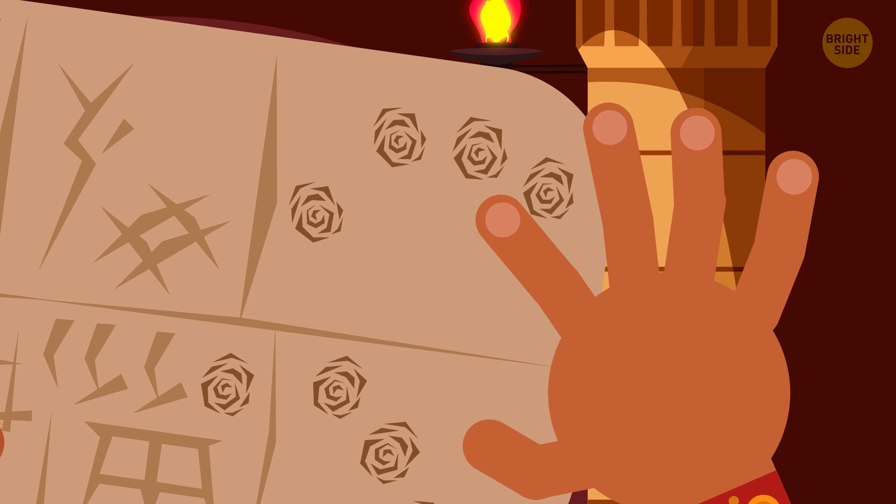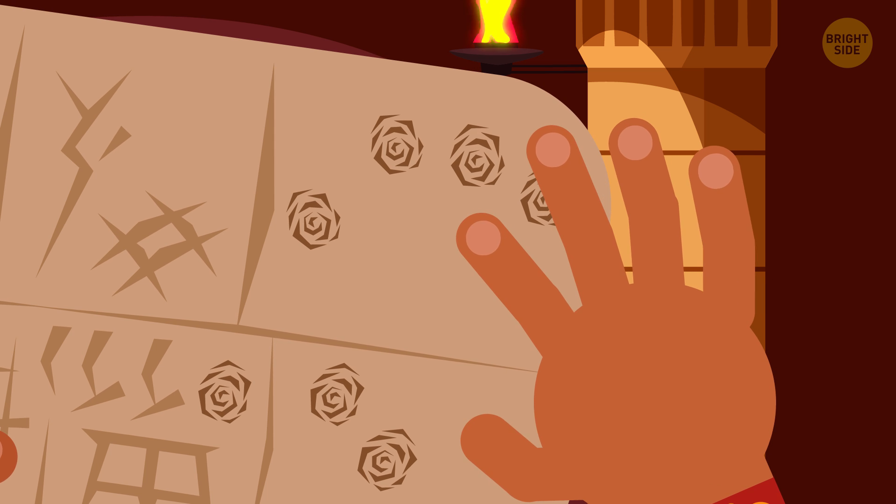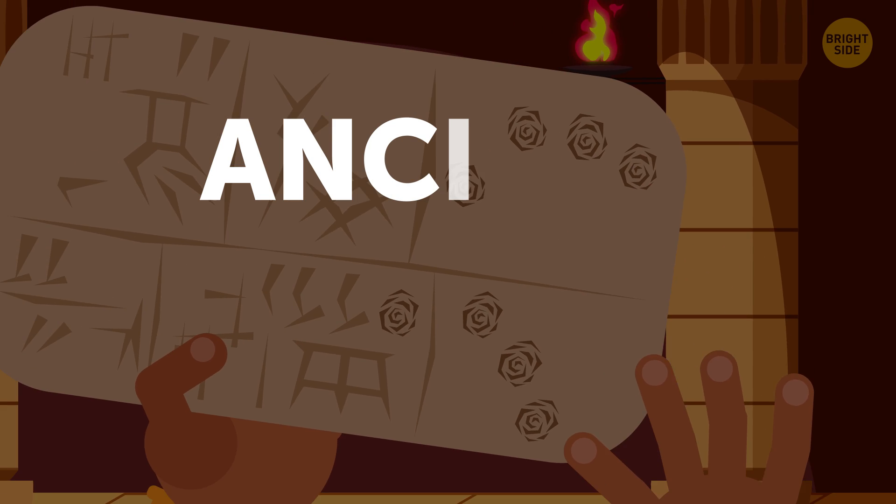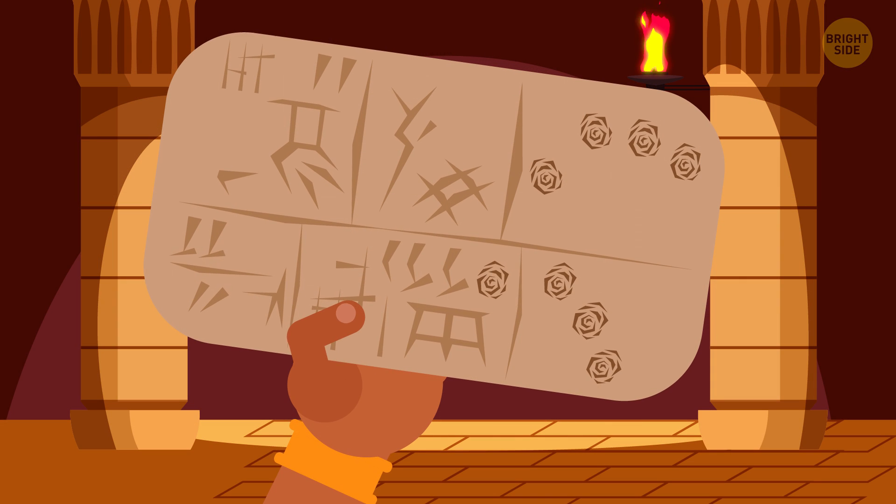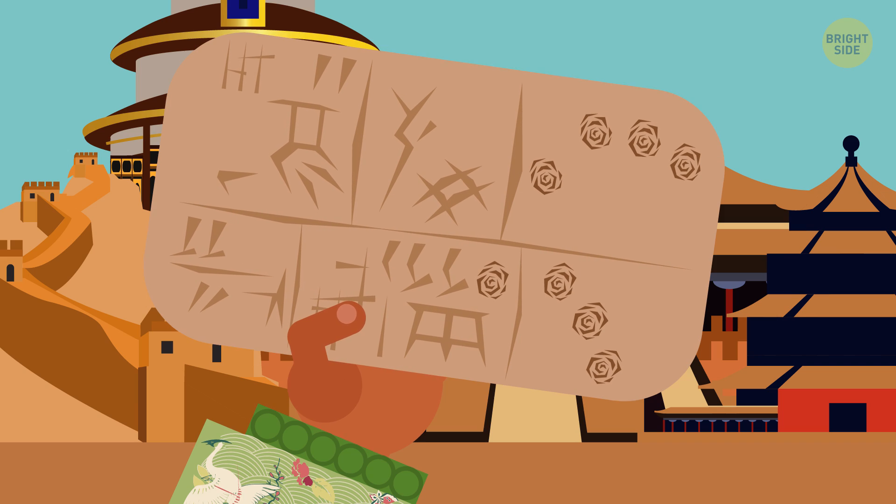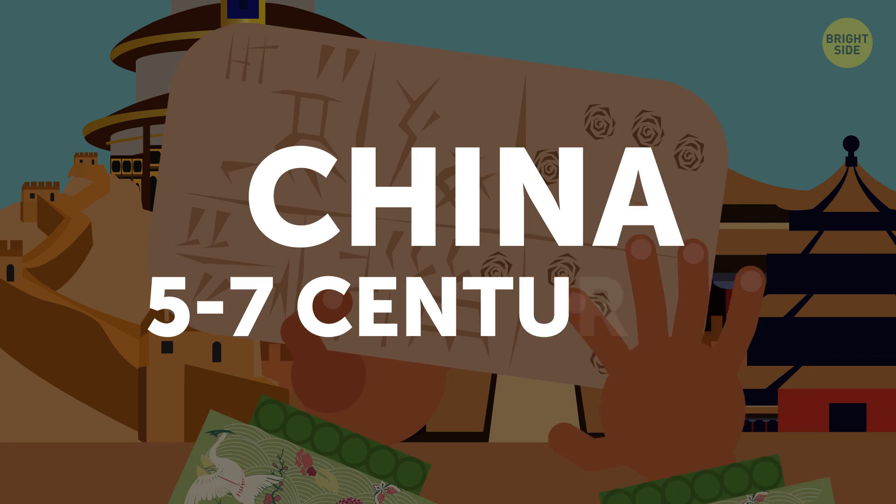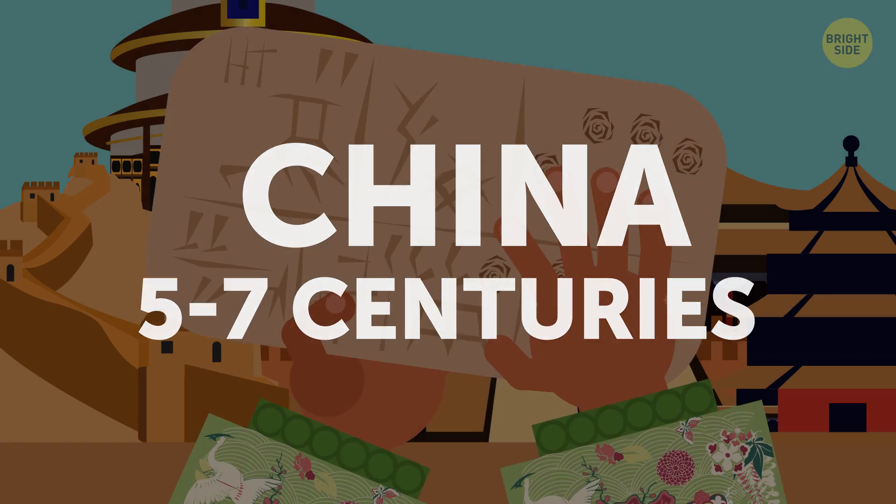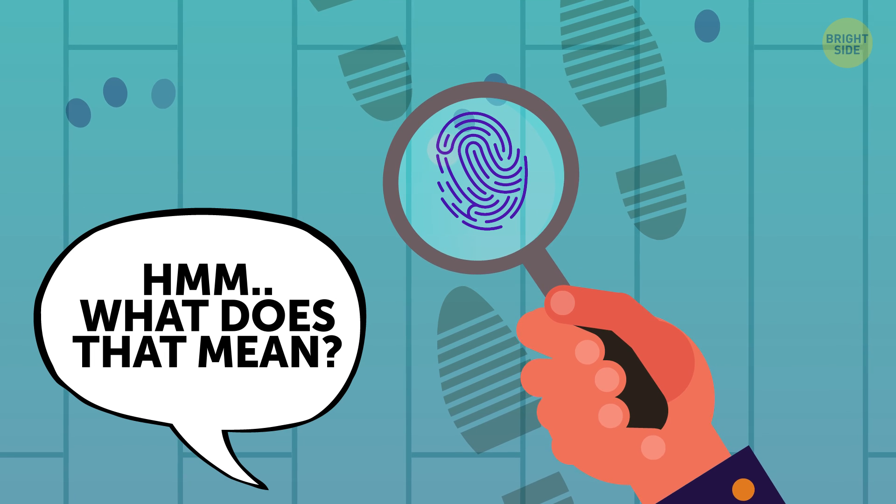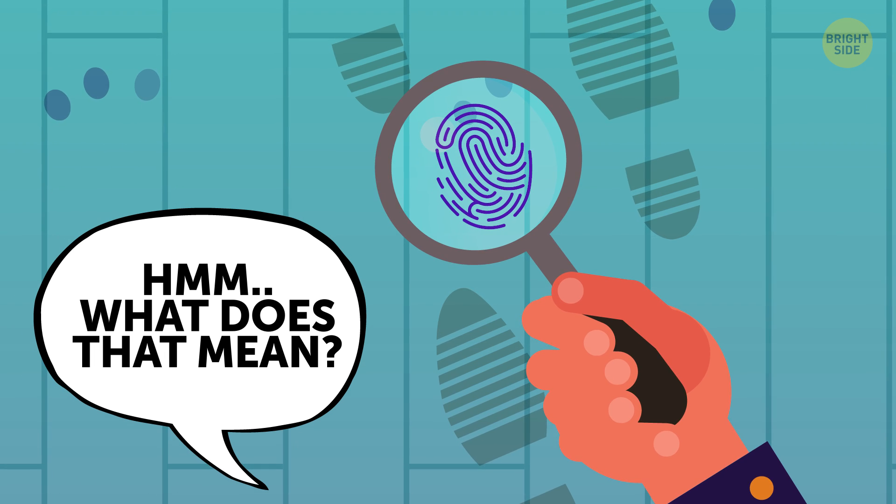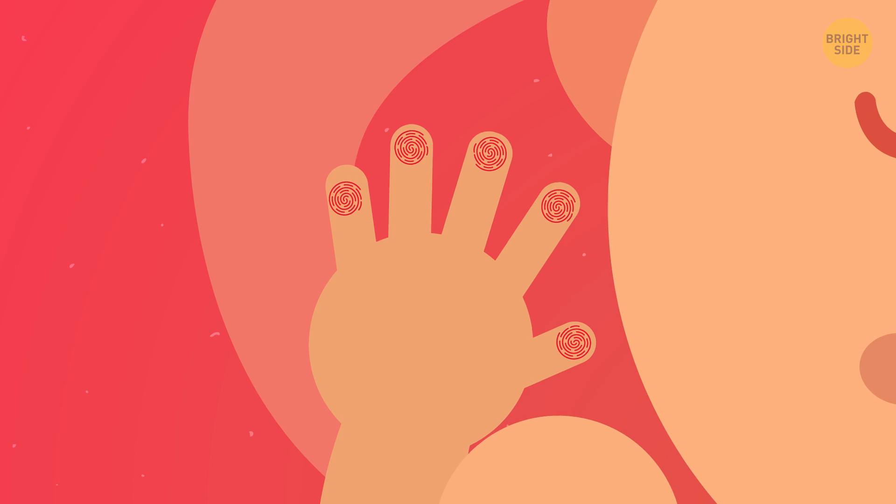Interestingly, humanity has known about the uniqueness of fingerprints for a long time. In ancient Babylon, about 2000 BCE, people left prints on clay tablets as a signature. Then, in the 5th-7th centuries, they were used in China for the same purpose. But fingerprinting wasn't used for police investigations until 1902 in the UK.